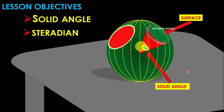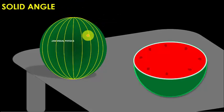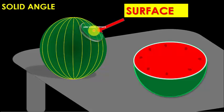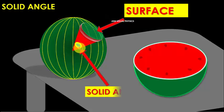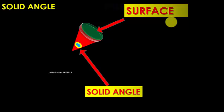In this video you will learn about solid angle and its unit steradian. First we define solid angle. We take a spherical object like a watermelon, then we take a circular surface. The angle subtended by this surface at the center of the spherical object is called solid angle. So we can define solid angle as the angle subtended by a surface at the center of a sphere.